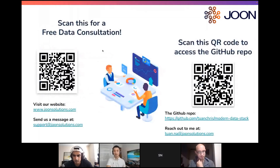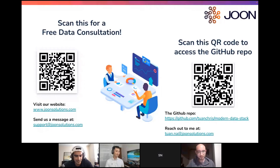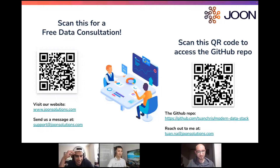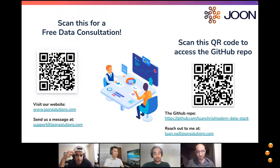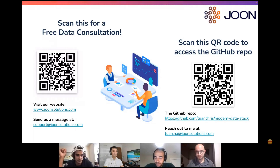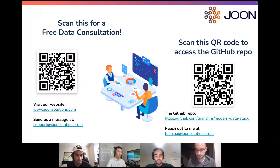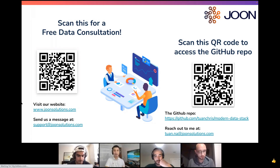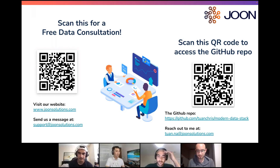If you'd like to book a free consultation, scan the QR code on the left to go to our website. If you want access to the GitHub repo I just showed, scan the QR code on the right, or reach out to me at my email. That's it for me. The QR code on the left takes you to book a free consultation with June Solutions, and the one on the right is to access the GitHub repo for this demo.